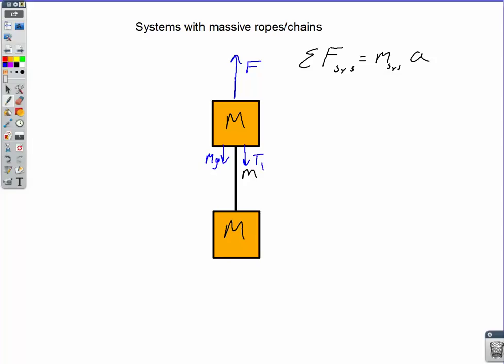For the bottom block, we are going to have another tension, and we're going to call this tension T2. It's going to be different than T1, and we're going to have big Mg also pulling down on that one. And now what's new here is since the rope itself has mass, we need to take a look at a free body diagram for the rope.